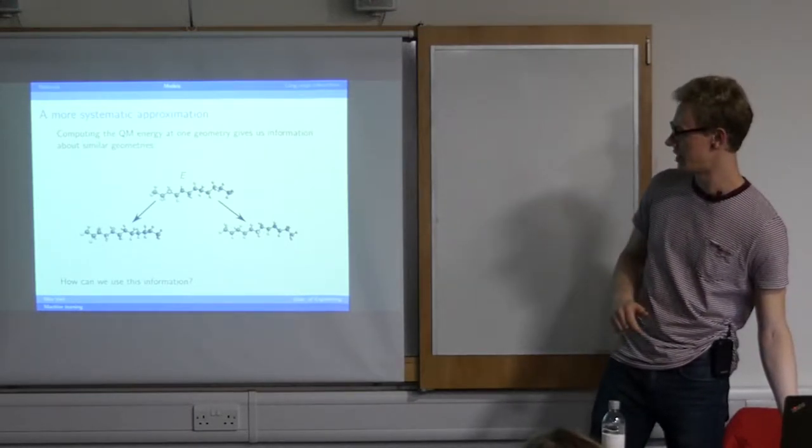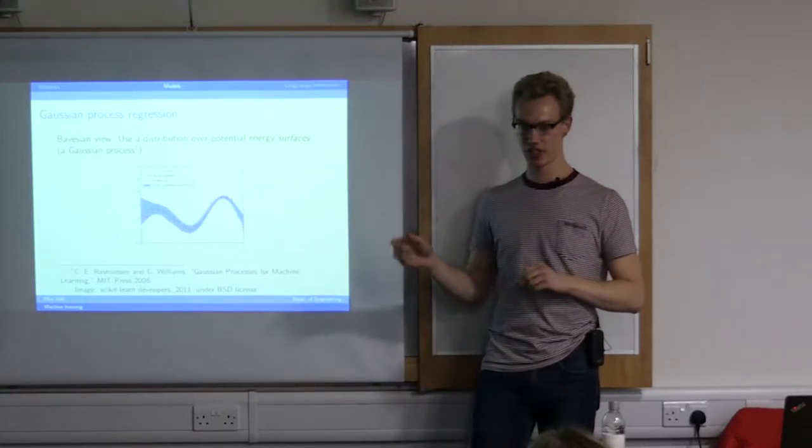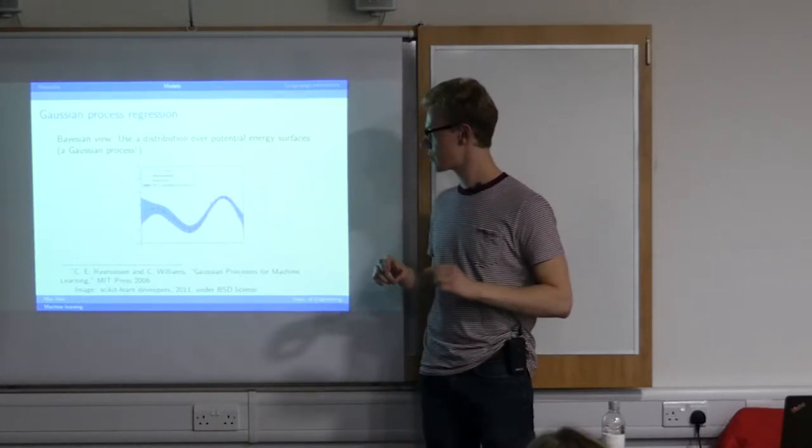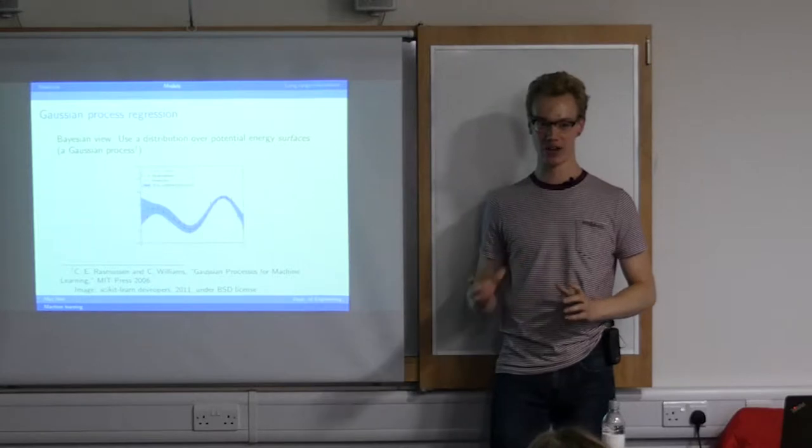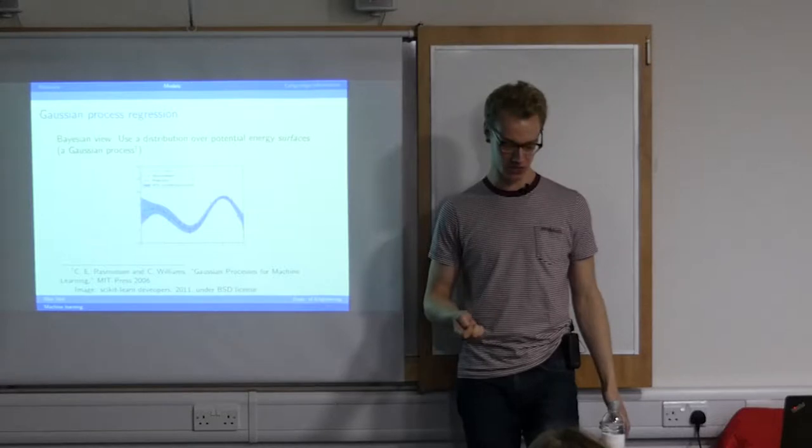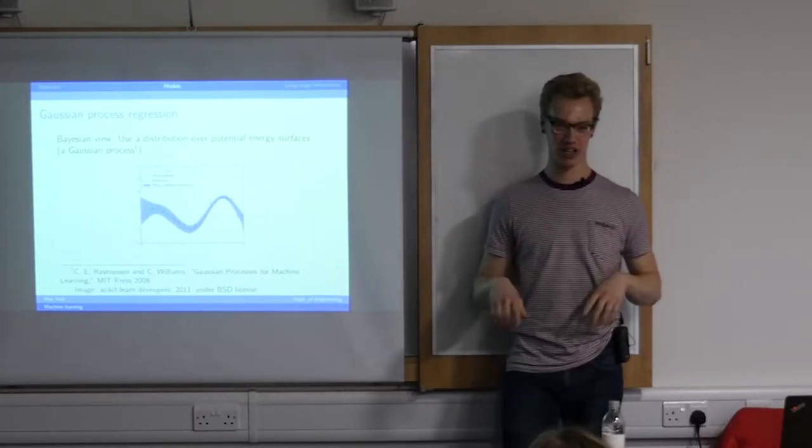So the way we use this information is we make use of something called Gaussian processes. So if you think back to our Lennard-Jones two dimensional potential example, instead of thinking about adjusting two parameters, we think of just all the possible potential energy curves that we could draw for the interaction of those two molecules. And then we assign a probability to each individual potential energy surface, potential energy curve, whatever. And so we can use Bayesian statistics. We can put prior probabilities like we already know some things about how atoms and molecules interact.